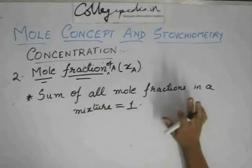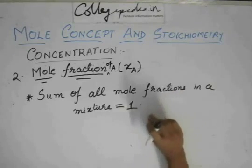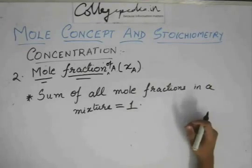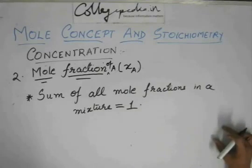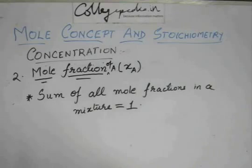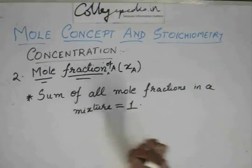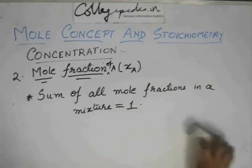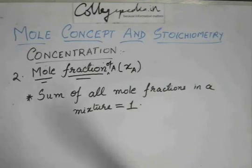So by this mole fraction you get a very familiar idea. That means you can see these things like probability. It's just like number of moles of A divided by the total number of moles. So it's like probability of finding A in the mixture. And as you can see that all the probabilities always add up to 1, and so do all the mole fractions in a mixture always add up to 1. So it's just you can link it with probability, although it's not actually the probability.